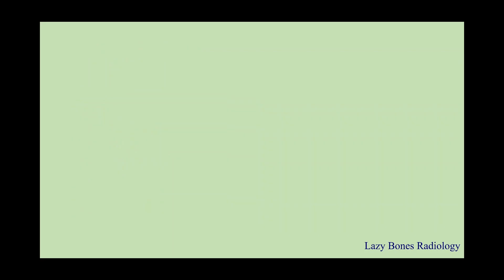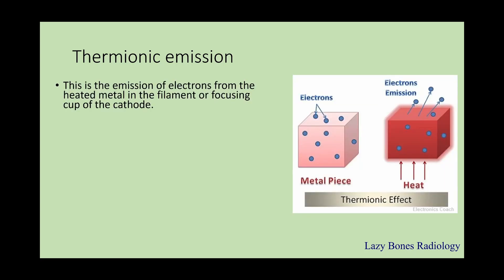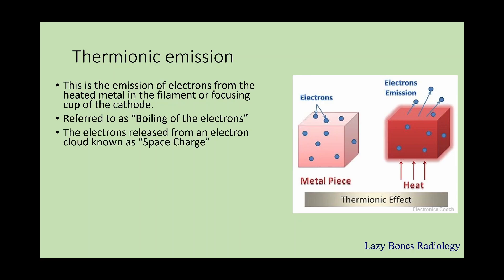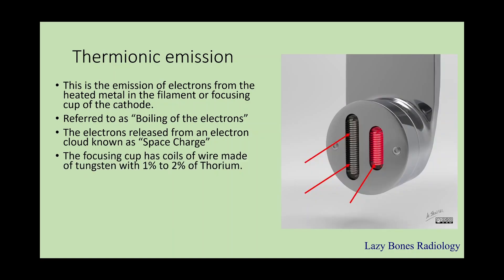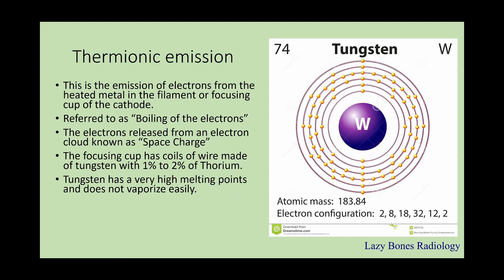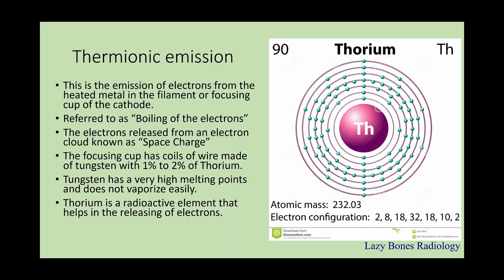Now let's begin with the x-ray production. First we start with thermionic emission. This is the emission of electrons from the heated metal within the filament or the focusing cup inside of the cathode. This is referred to as boiling of the electrons. As the electrons are boiled off, they form an electron cloud, which is known as a space charge. The filament coils are made out of tungsten and one to two percent thorium. The reason we use tungsten is because it has a very high melting point and does not vaporize easily, and the reason we use thorium is because it's a radioactive element that helps release electrons.